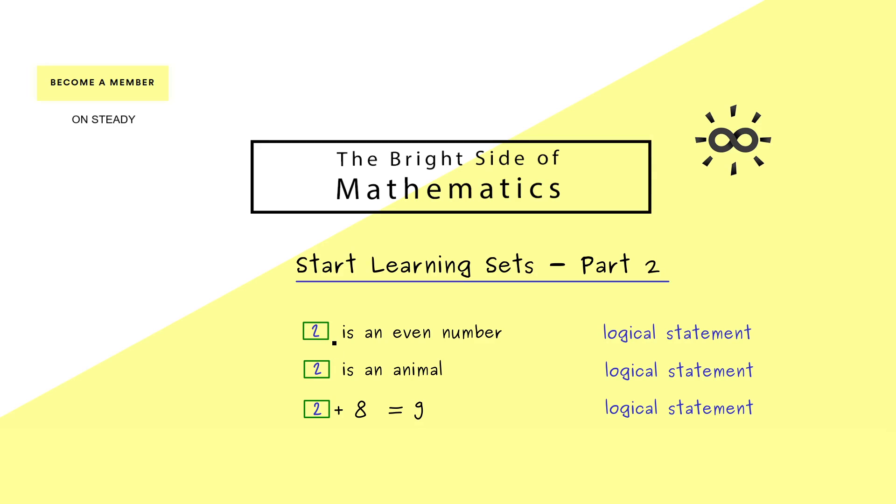When you put in a chosen object, you get out a logical statement. For example, if we fill in the number 2, we get '2 is an even number,' which is a logical statement. Also '2 is an animal' and '2 plus 8 is 9' are logical statements.